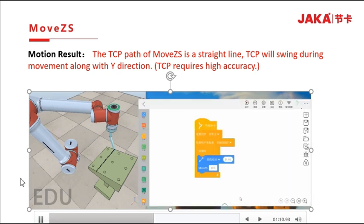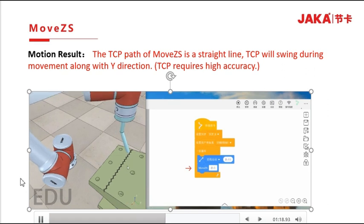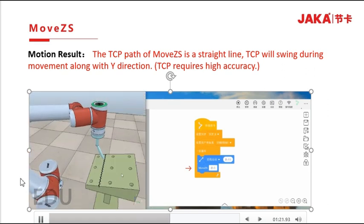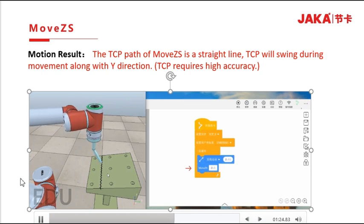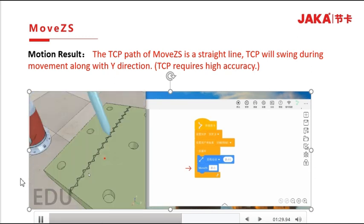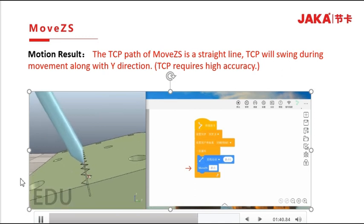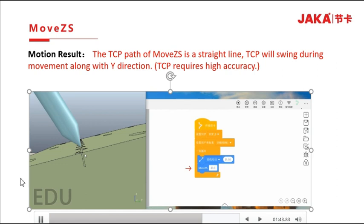Run the program and move the robot to the initial position. In this video, we can see that the TCP path is a straight line with the MOVEZS instruction, and it will swing along the Y axis while moving.